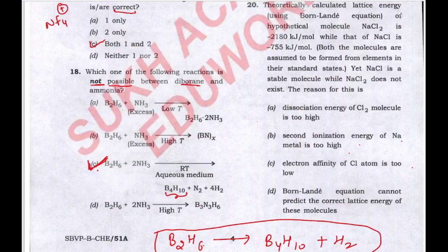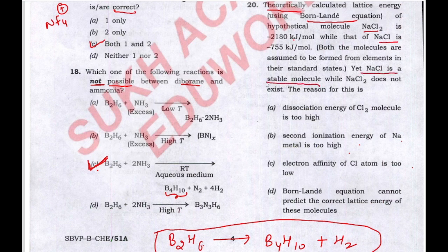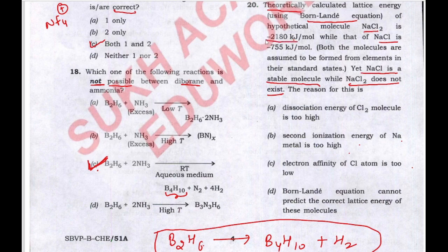In the next question, the theoretically calculated lattice energy using the Born-Landé equation of hypothetical NaCl2 is given, and both molecules are assumed to be formed from elements in their standard states. Yet NaCl is a stable molecule while NaCl2 does not exist. The Born-Landé equation is used to find lattice energy, and although we can theoretically calculate a much higher lattice energy for NaCl2, NaCl2 does not exist.